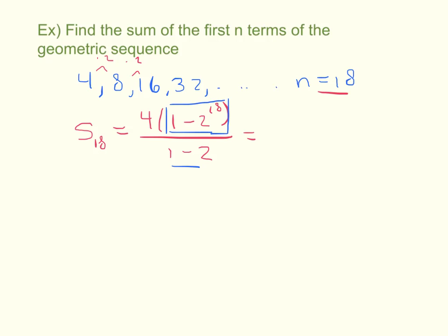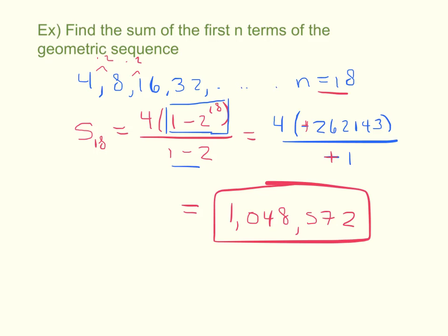This right here, in the rectangle, I usually punch in first in the calculator, and that gave me this. This at the bottom is a negative 1. And then, whether you rely on the calculator or not, a negative divided by a negative is a positive. And now you do 4 times 262,143. You get your final answer of 1,048,572. So if you add up the first 18 terms of this geometric sequence, that answer is 1,048,572.